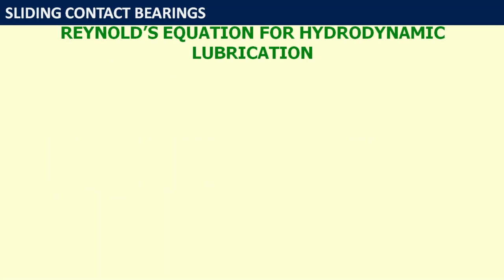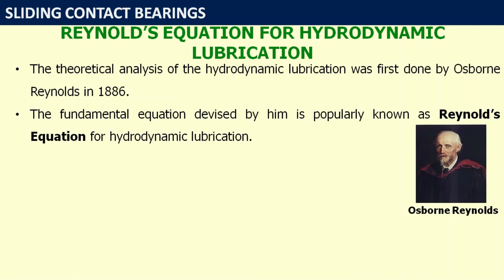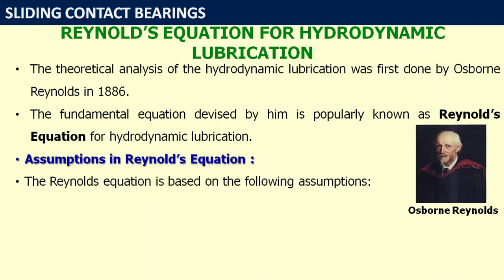Let us see Reynolds equation for hydrodynamic lubrication. The theoretical analysis of hydrodynamic lubrication was first done by Osborne Reynolds in 1886. The fundamental equation devised by him is popularly known as Reynolds equation for hydrodynamic lubrication. This equation is based on certain assumptions — let us see what assumptions he made in deriving this equation. The Reynolds equation is based on the following assumptions.